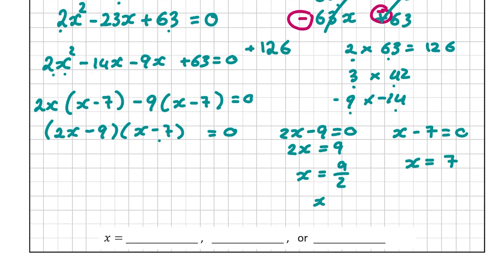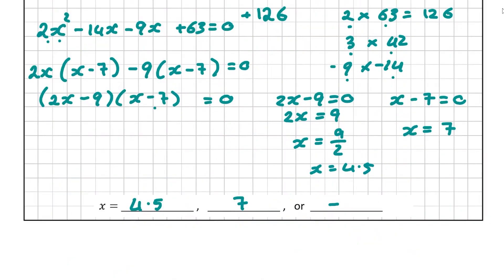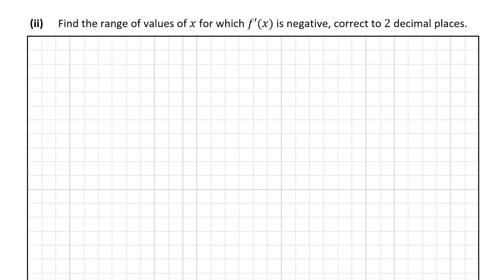9 divided by 2 is 4.5, so x equals 4.5. So we have x equals 4.5, x equals 7, and x equals minus 1. That's all for this question and it is worth 15 marks. Now let's move on to B part 2, which is the final part of the whole question.